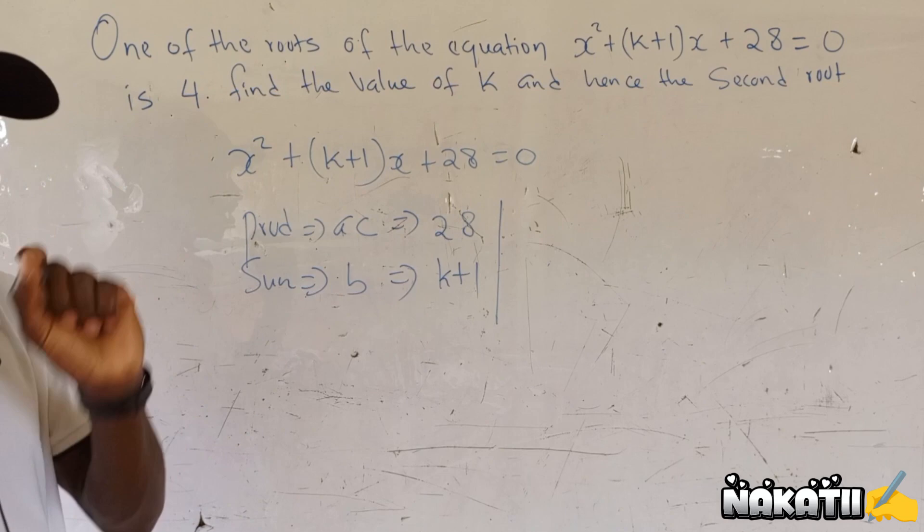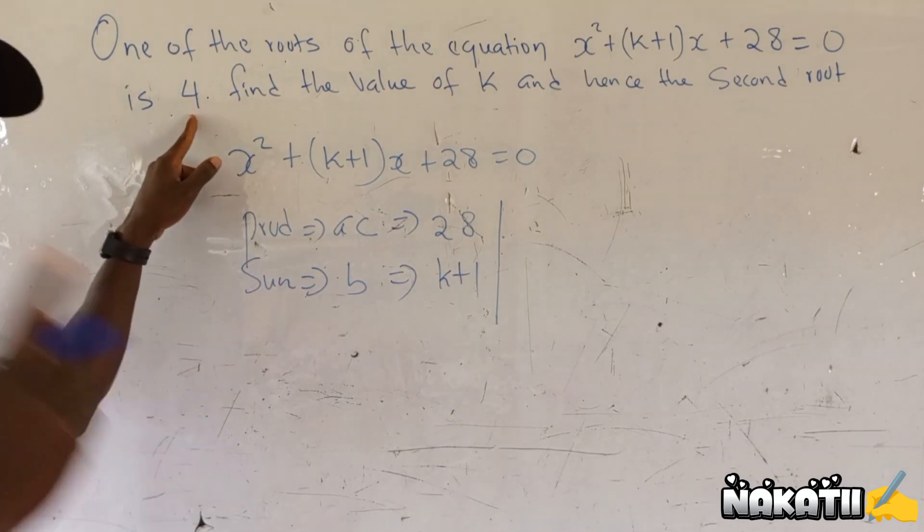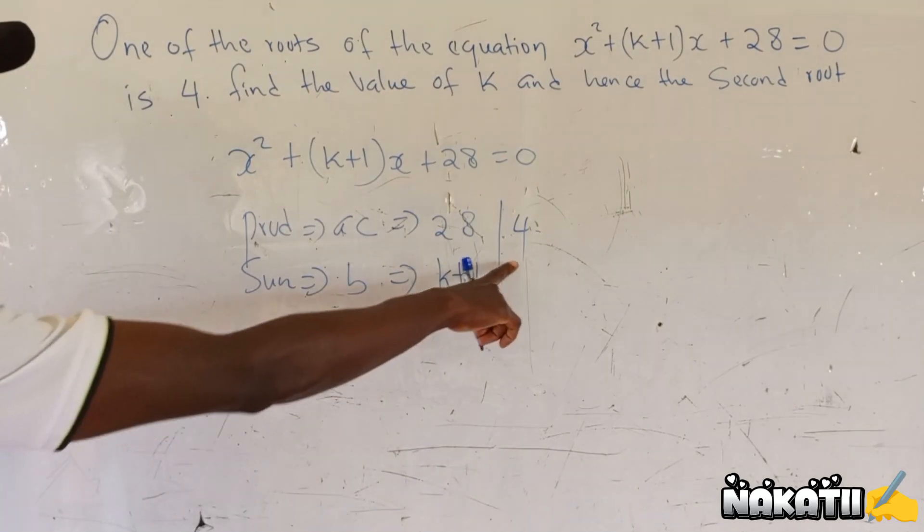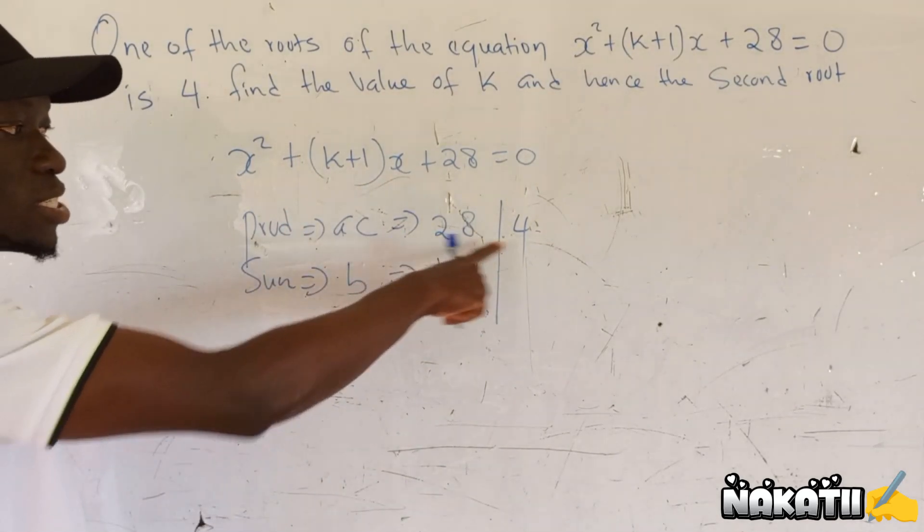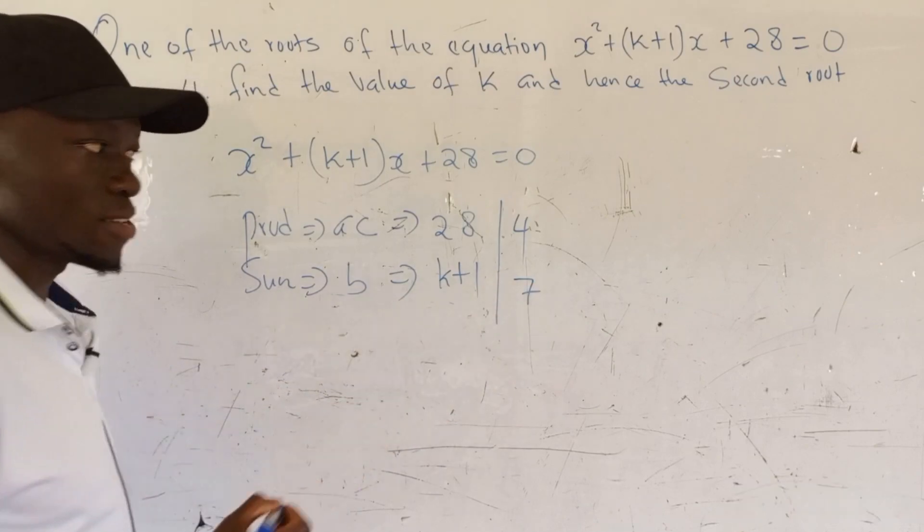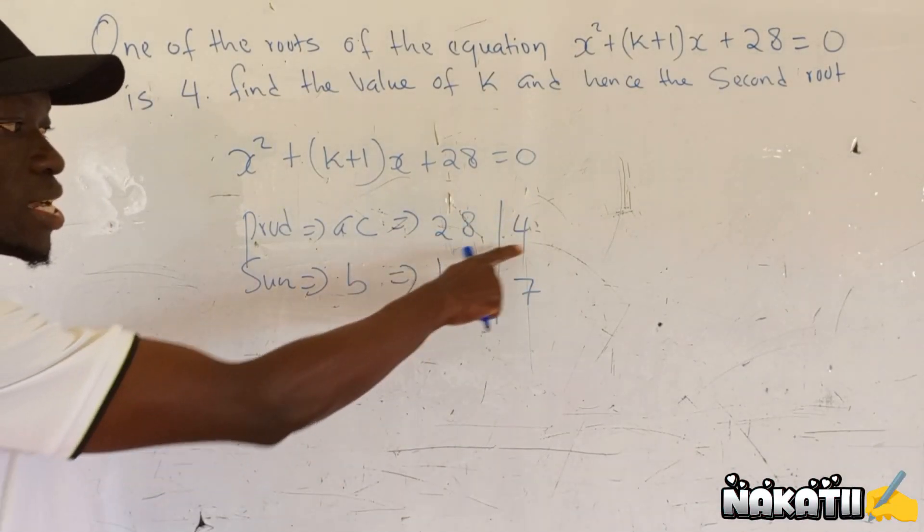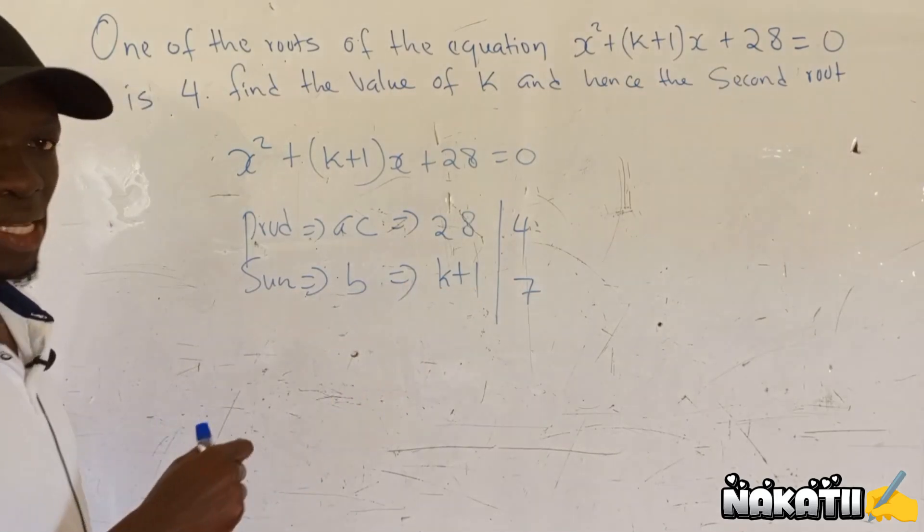Now we have been given one of the roots as 4, meaning one of the numbers here will be 4. If we have one of the numbers, to get the other number you just take 28 divided by 4, you get 7. These are the two numbers that when you multiply them you are going to get 28, and when you add them you will get k plus 1.